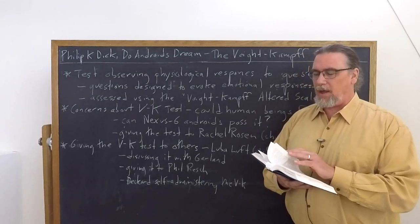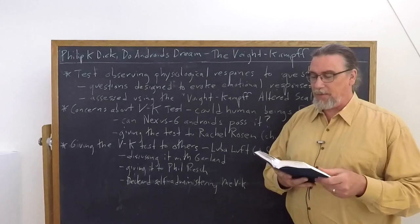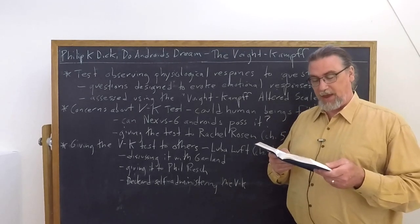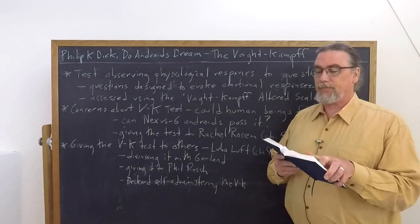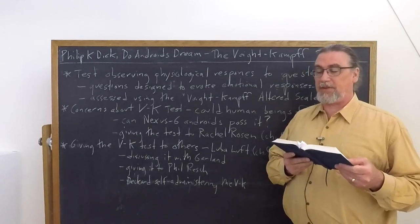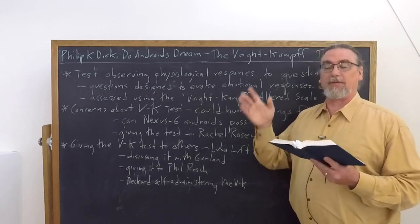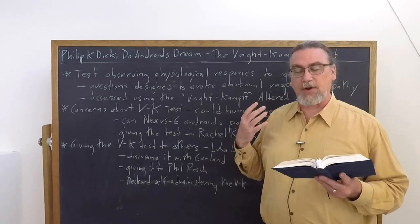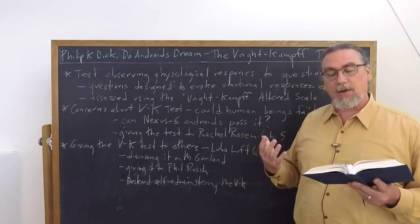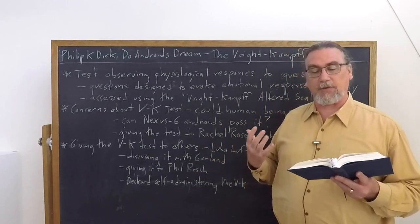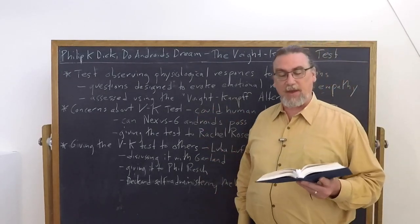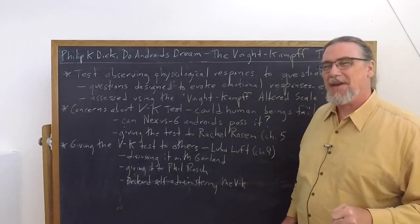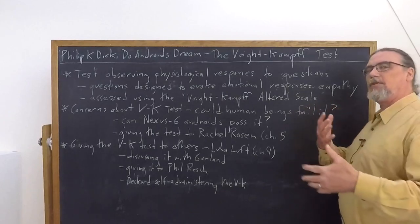Well, as we find out, Rick says, the consensus of police opinion is known to you in Lurie Kamps. There's the Kampff of the Voigt-Kamp test article written eight years ago, role-taking blockage in the undeteriorated schizophrenic. Kampff compared the diminished empathetic faculty found in human mental patients and a superficially similar but basically different version. So the test was altered or not the test, but rather the interpretation of the test was altered in order to tune it up.